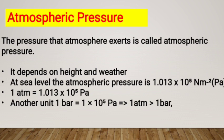At sea level, the atmospheric pressure is 1.013 × 10⁵ Newtons per meter squared. This value is also approximately equal to one bar, though one bar is slightly less than the standard atmospheric pressure at sea level.